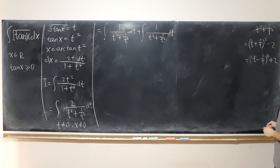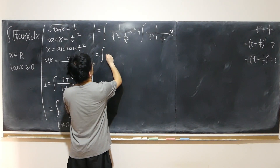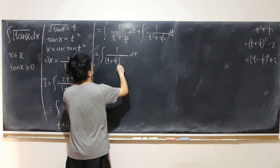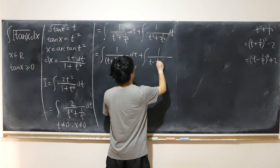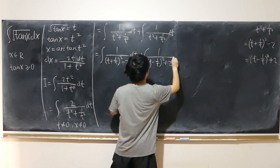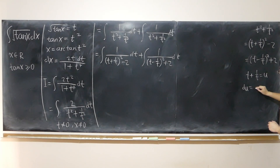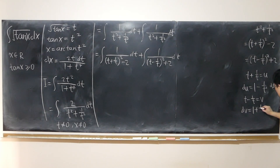So that gives me 1 dt over t plus 1 over t squared minus 2, and 1 over t minus 1 over t quantity squared plus 2 dt. If I let t plus 1 over t equal to u, then du is just 1 minus 1 over t squared dt. If I let t minus 1 over t equal to v, then dv equals 1 plus 1 over t squared dt.